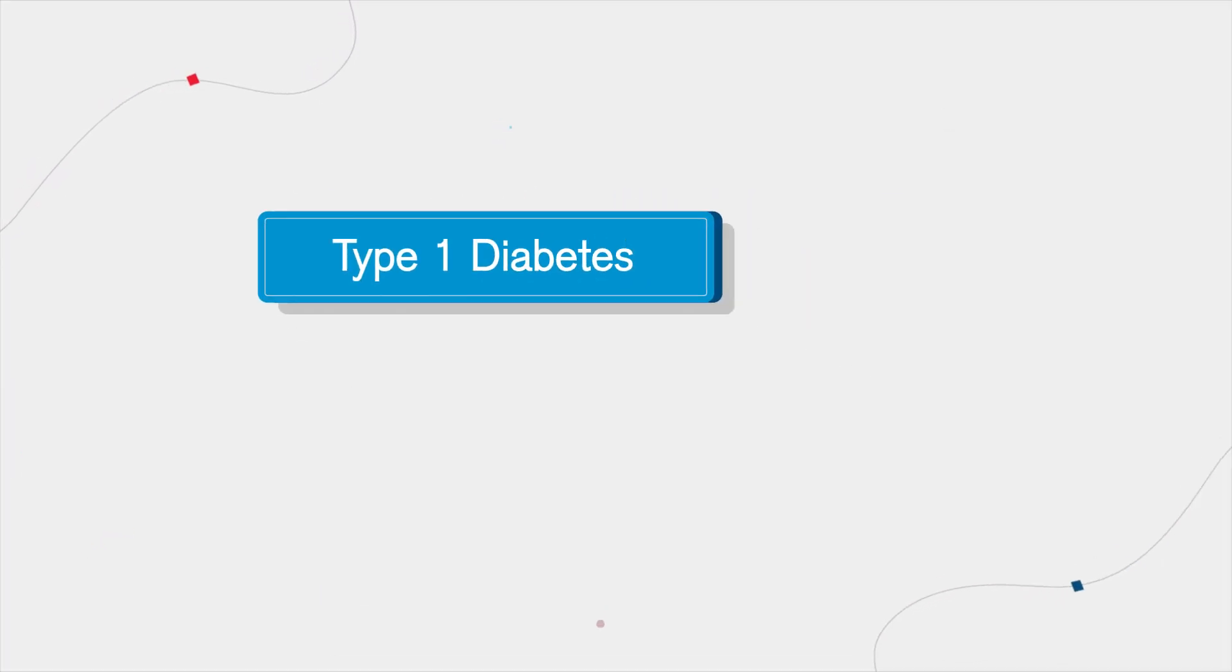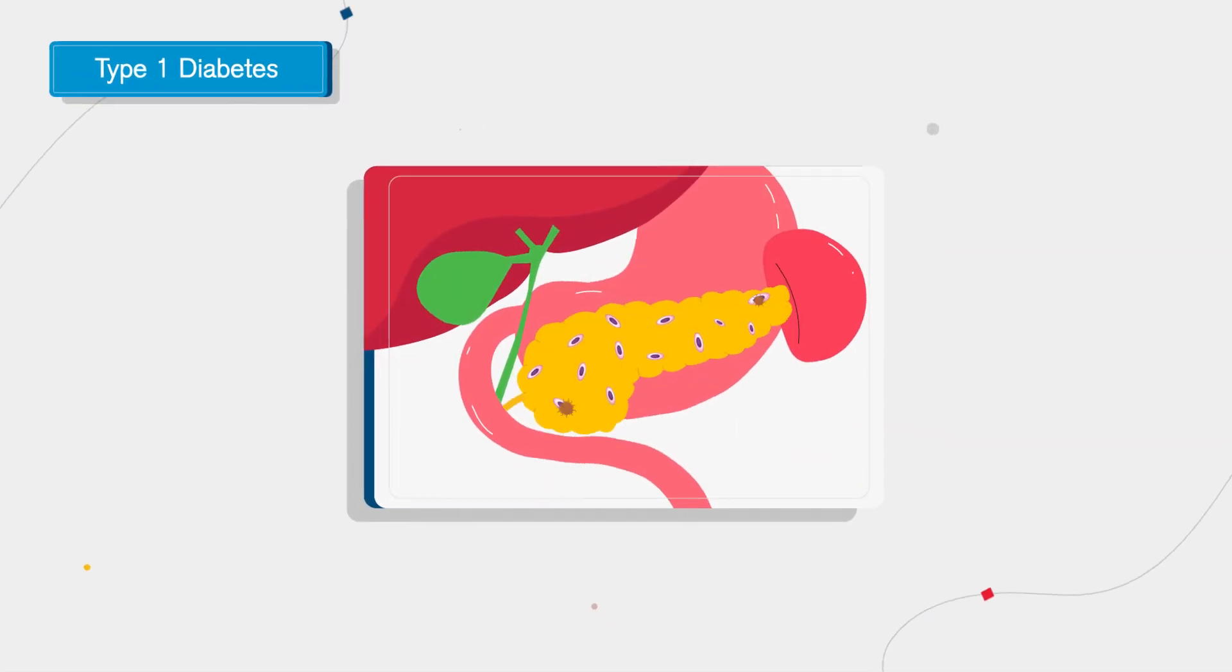Type 1 diabetes is an autoimmune disease where the body's immune system attacks insulin-producing cells in the pancreas.